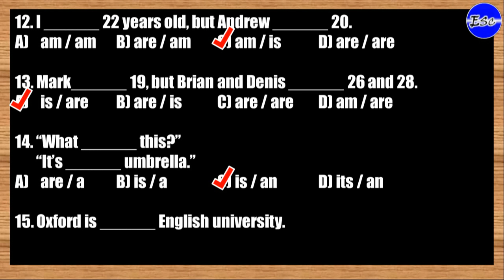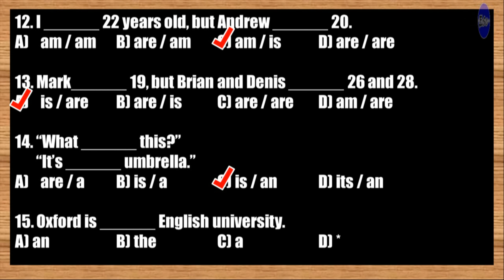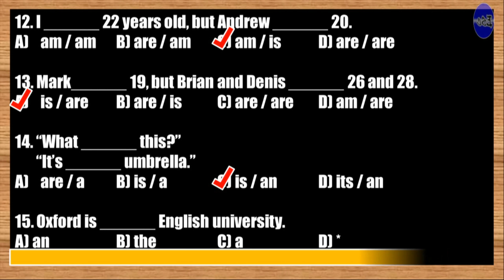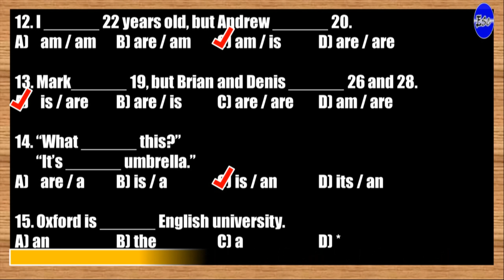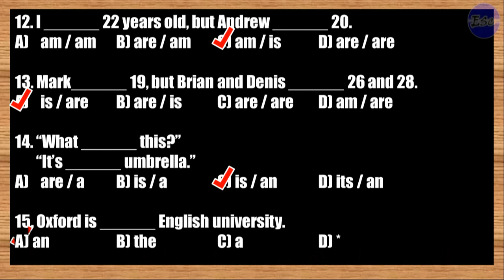Number fifteen: Oxford is blank English university. The correct answer is option A. Oxford is an English university.